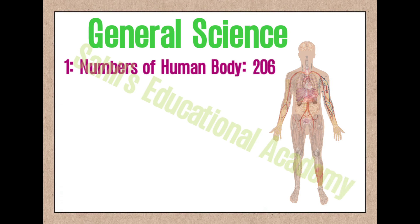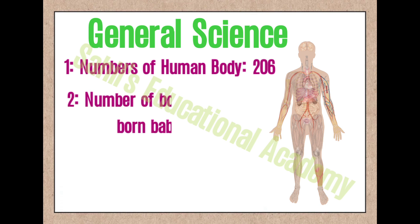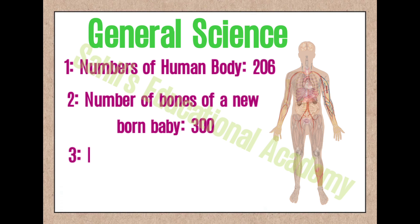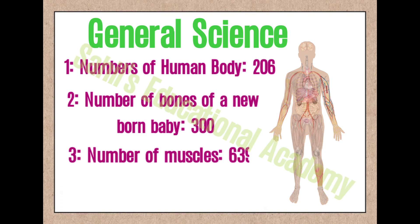1. Number of bones: 206. 2. Number of bones of a newborn baby: 300. 3. Number of muscles: 639.